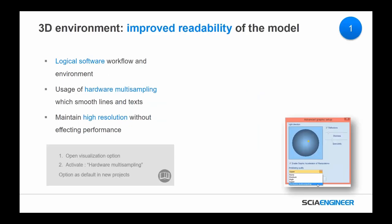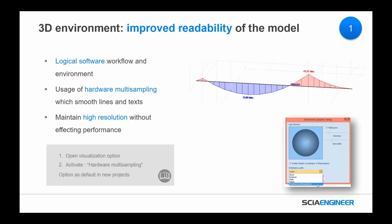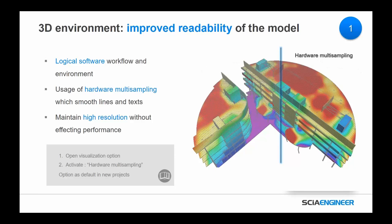For improved readability in the model, we tried to have a more logical workflow and environment with a slight reorganization of things. We're using hardware multi-sampling, which smooths out the lines and text for better readability. This allows us to maintain higher resolution without affecting performance. Hardware multi-sampling is on by default, but you can open the graphics setup to switch it on or off. You can see the difference between previous results — a bit edgy — and the new results, with much better visualization.